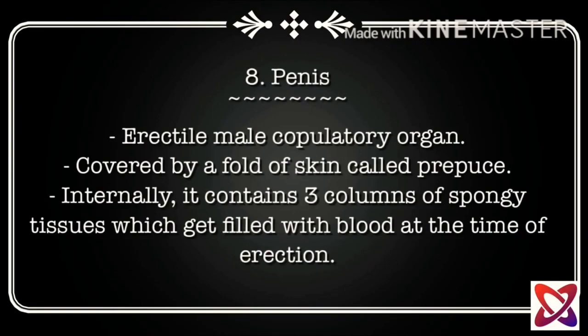The eighth component is the penis, which is the erectile male copulatory organ. It is covered by a fold of skin called the prepuce. Internally, it contains three columns of spongy tissue which get filled with blood at the time of erection.